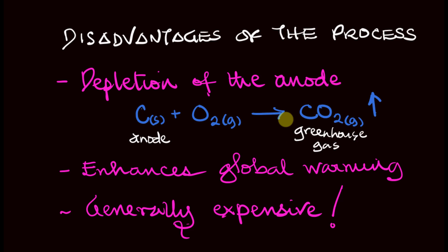The carbon dioxide that is produced at the anode and given off as a waste gas increases the amount of greenhouse gases in the atmosphere, and that leads to an increase in global warming. So that's one of the disadvantages of this process - it increases global warming due to the production of carbon dioxide gas as a waste gas.